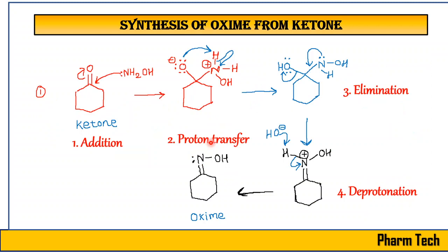Coming to the synthesis of oximes from ketones — this is our initial ketone, and I have taken the example of cyclohexanone. We are adding hydroxylamine, which has a lone pair that will attack on the carbonyl carbon, because there is a delta-positive charge present there. As it attacks, an extra bond will form, the C=O bond will cleave, and the oxygen will gain an electron, becoming negative. The nitrogen, having an extra bond, will have three bonds, and this intermediate will form.